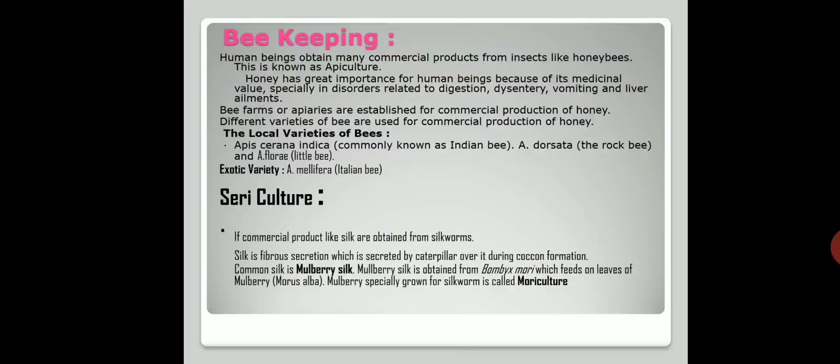Commercial products from insects like honeybees is known as apiculture. Honey has great importance for human beings due to its medicinal value, especially for disorders related to digestion, dysentery, vomiting, and liver ailments. Bee farms are established for commercial production of honey. Different varieties of bees are used, such as local varieties like Apis cerana indica (Indian bee), Apis dorsata (rock bee), Apis florea (little bee), and exotic varieties like Apis mellifera (Italian bee).